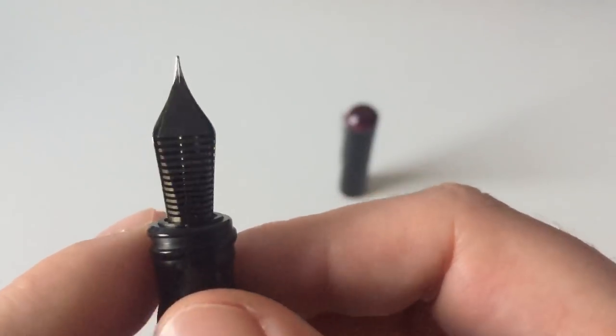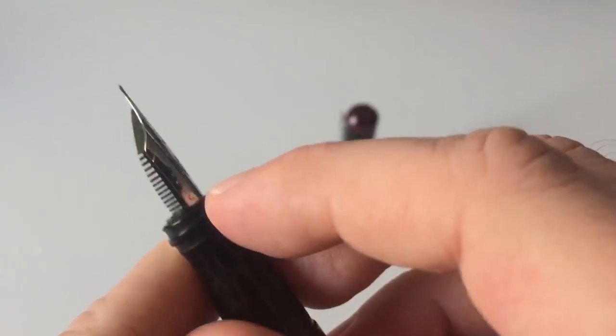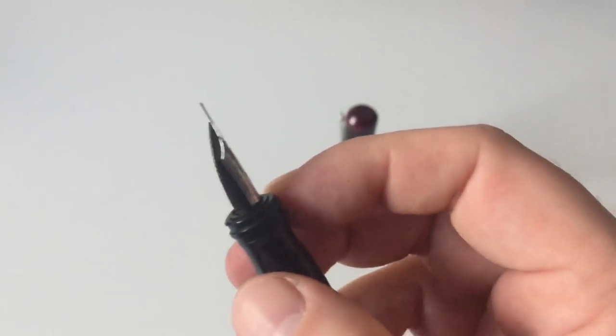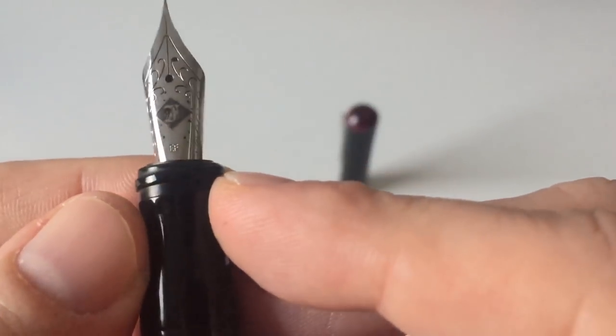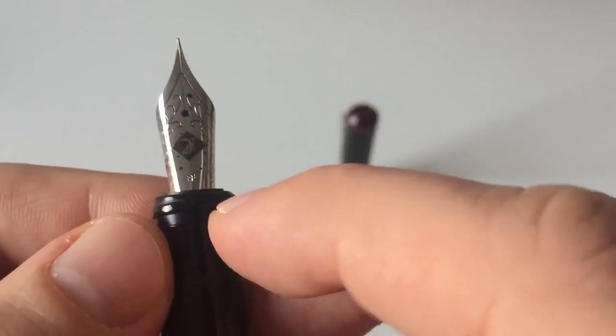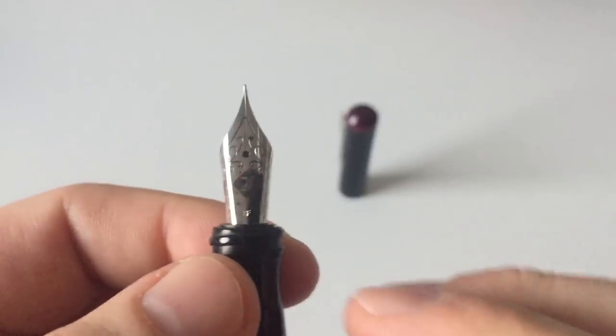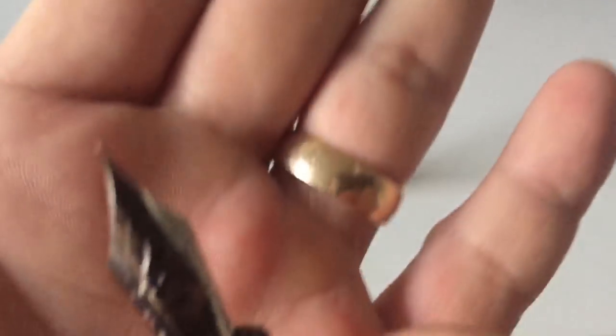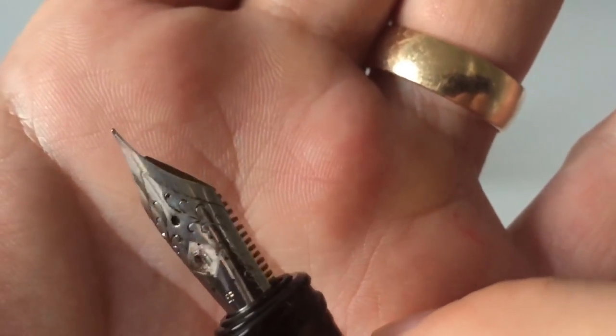You see some Okuyama sheen on that feed down here. Of course, it's a number 6 nib, so you can swap that out for a JoWo nib or a titanium nib or whatever you have laying around home. That, as a matter of fact here, has the Franklin Christoph logo on it, some scroll work, says EF because that's what Mike Masuyama, Mr. Masuyama, used for grinding it down to a needlepoint.